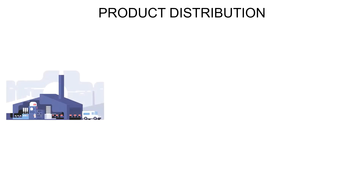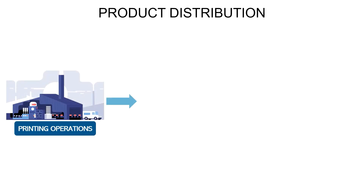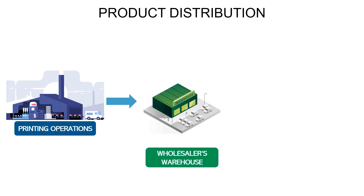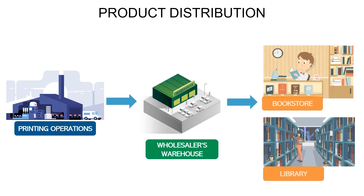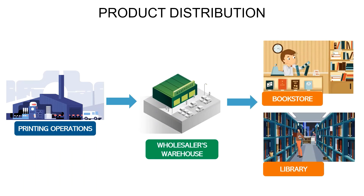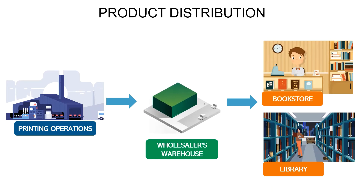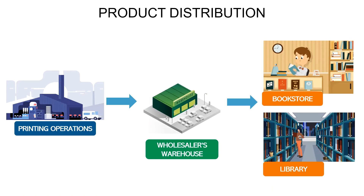Product distribution: after the book printing operations, the finished product is shipped from the printer to a wholesaler's warehouse and finally to a retail bookstore or library. Additional environmental burdens are associated with the production and disposition of the book's packaging.